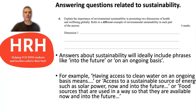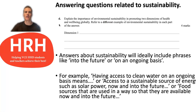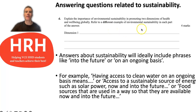Here is an example of a question that was on a recent past exam. It asks you to explain the importance of environmental sustainability in promoting two dimensions of health and wellbeing globally, and to refer to a different example of environmental sustainability in each part of the answer. You can see it's worth four marks. What you would need to do is give an example of environmental sustainability, then link that to a dimension of health and wellbeing — such as physical or social — and make sure you're referencing that term worldwide or globally as part of your answer.